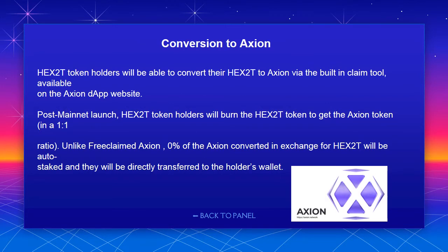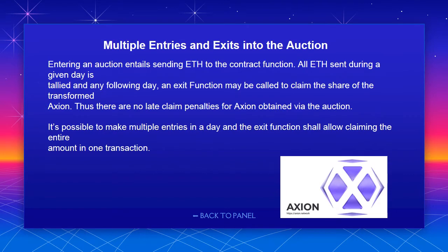Conversion to Axion: HEX2T token holders will be able to convert their HEX2T to Axion via the built-in claim tool available on the Axion dApp website post-mainnet launch. HEX2T token holders will burn the HEX2T token to get the Axion token in a one-to-one ratio. Unlike free claimed Axion, 0% of the Axion converted in exchange for HEX2T will be auto-staked — they will be directly transferred to the holder's wallet.